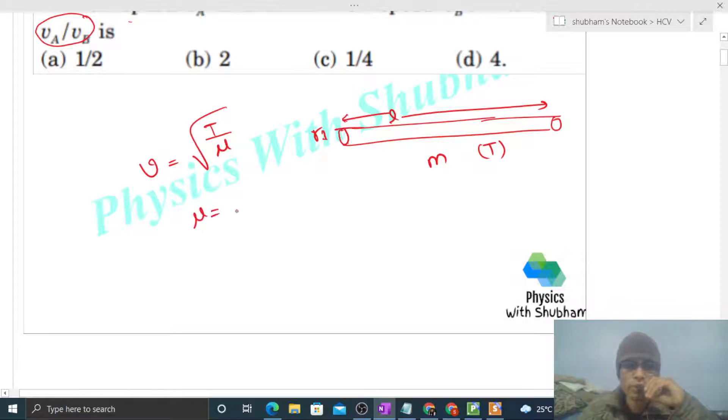What is μ? That is mass per unit length. Mass can be written as density times volume. Volume of this string will be π r² times length, which is cross-sectional area times length. Volume times density gives mass. Divided by length, this is μ. Length cancels out, so it becomes density times π r².